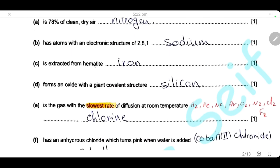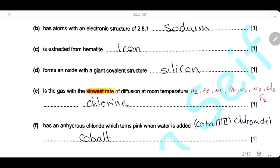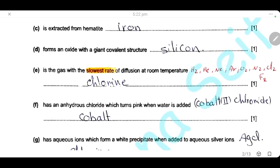The element extracted from hematite — hematite is the ore of iron. Which one forms an oxide with a giant covalent structure? The oxide with a giant covalent structure is the oxide of silicon, because diamond and graphite form it only from carbon, but silicon forms a giant covalent structure with oxygen: silicon dioxide.